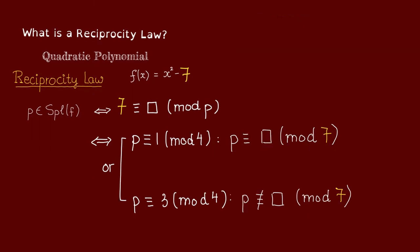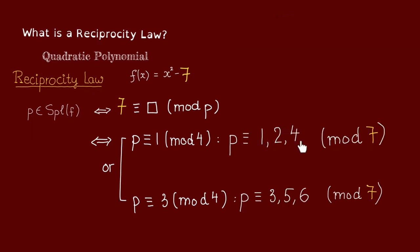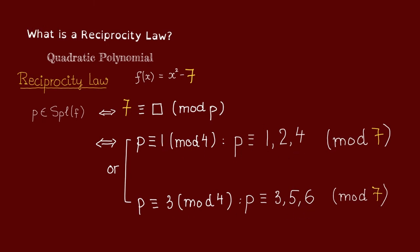And we do know the squares and non-squares modulo 7. The squares are just 1, 2, 4 and the non-squares are 3, 5, 6. Now it's kind of inconvenient to have a bunch of conditions like this.